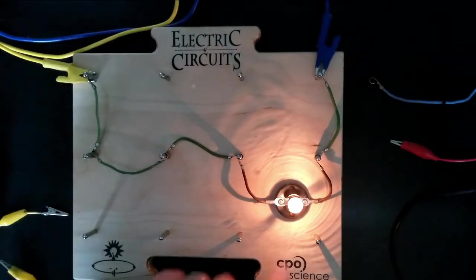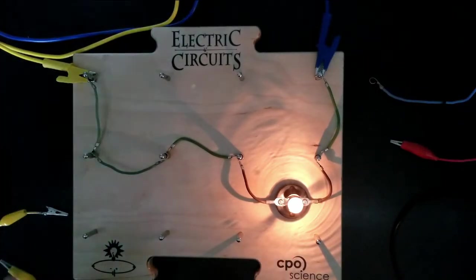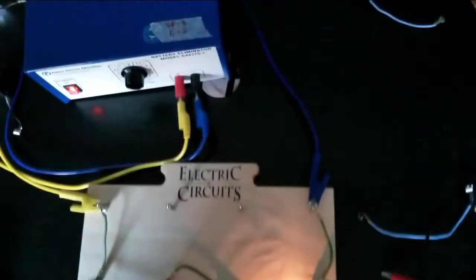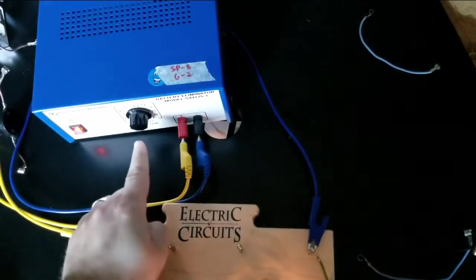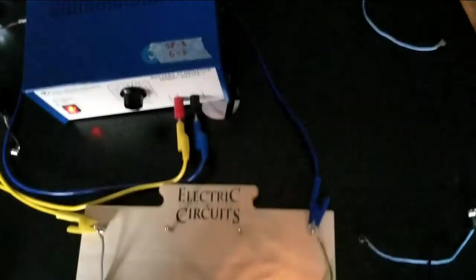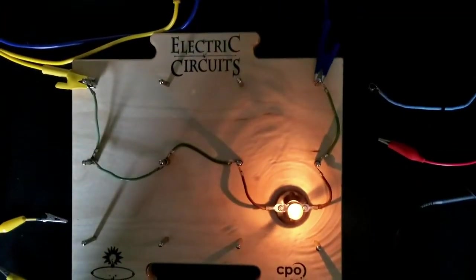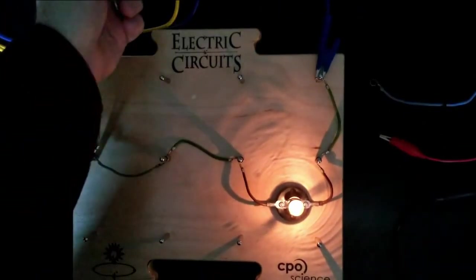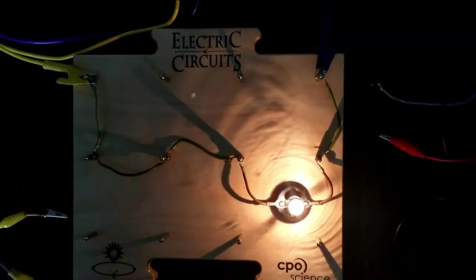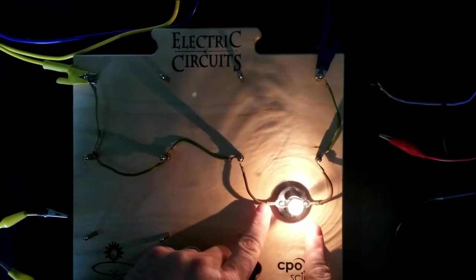I've got the light bulb connected to my battery emulator over there. Right now the voltage setting is low, like 1.5 volts. And if we increase the voltage, then we see a brighter light bulb, which means not only more energy but also more charges, more current.